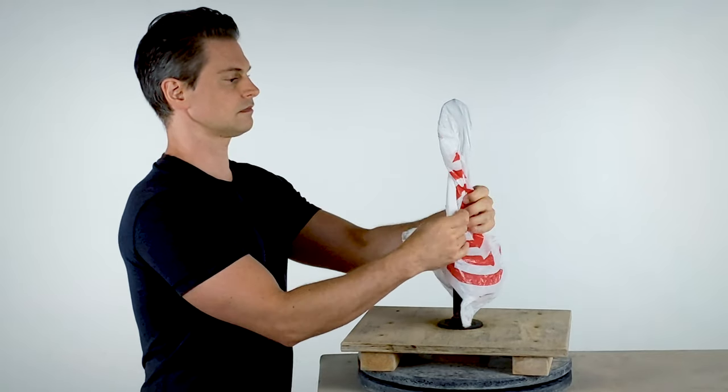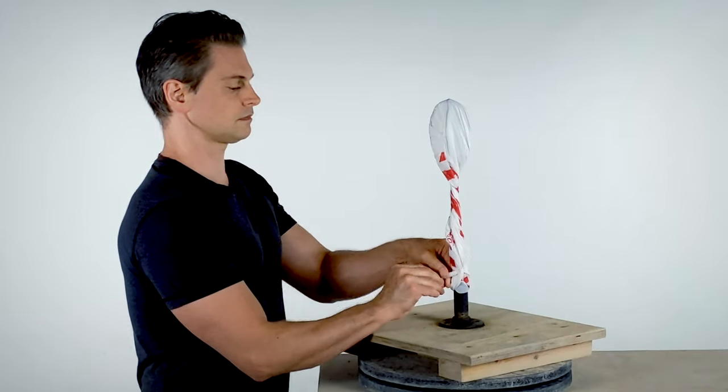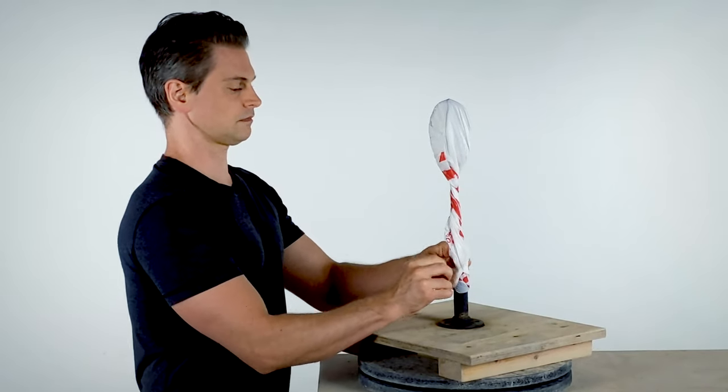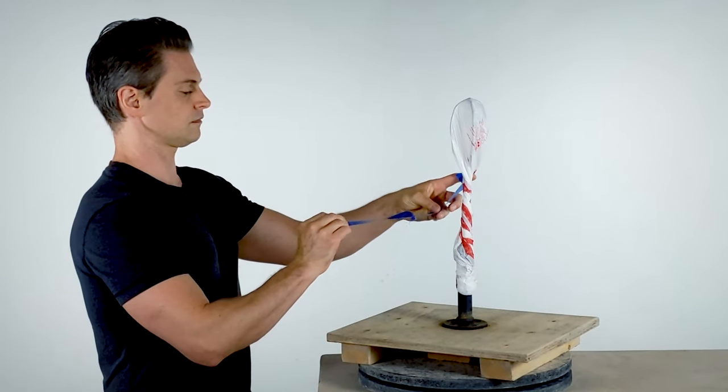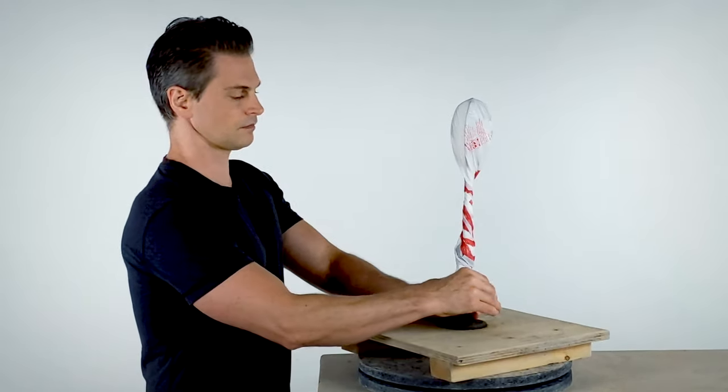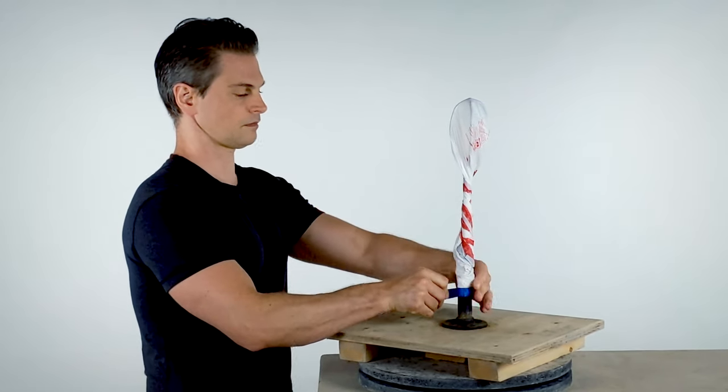Twist the bag around the armature in one direction. Tie it off at the handles. Tape it down with a thin strip of tape. Use as little tape as possible, as the clay won't stick as well to it as to the bag.